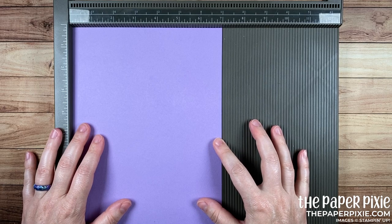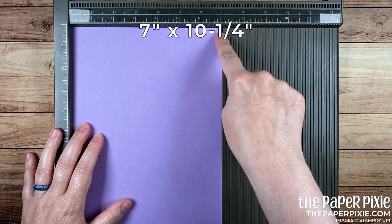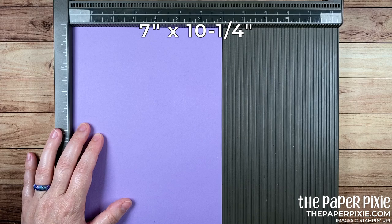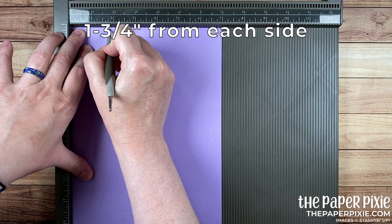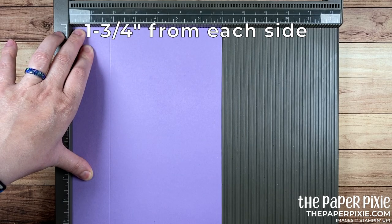I'm going to start with a piece of Highland Heather cardstock that measures seven inches by ten and a quarter inches and along the seven inch side we're going to score this at one and three quarters from each side.